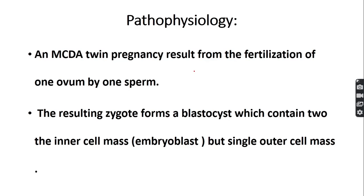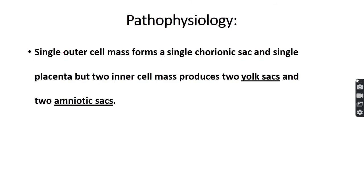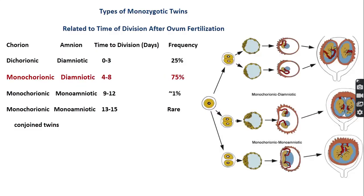Monochorionic diamniotic twin pregnancy results from the fertilization of one ovum by one sperm. The resulting zygote forms a blastocyst which contains two inner cell masses but a single outer cell mass. The single outer cell mass forms a single chorionic sac and a single placenta, while the two inner cell masses produce two yolk sacs and two amniotic sacs.